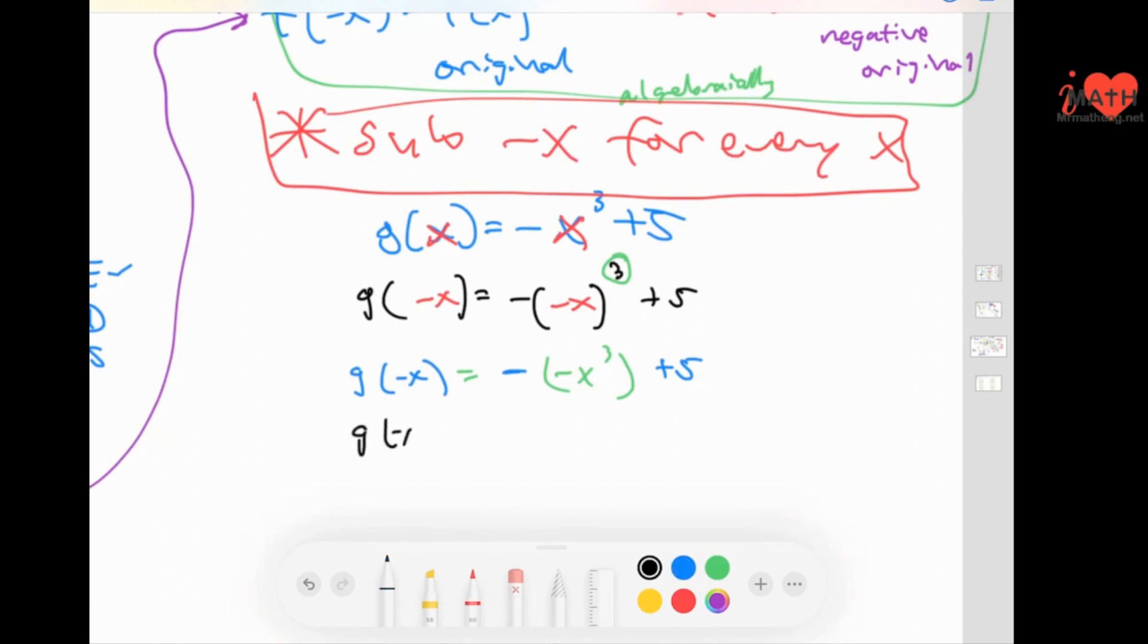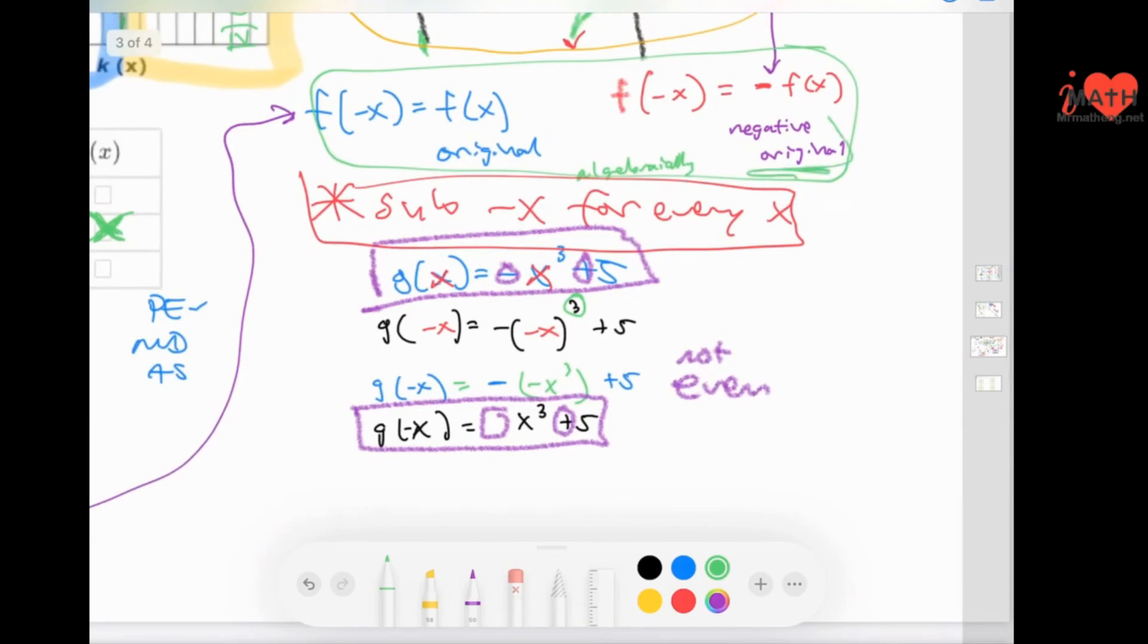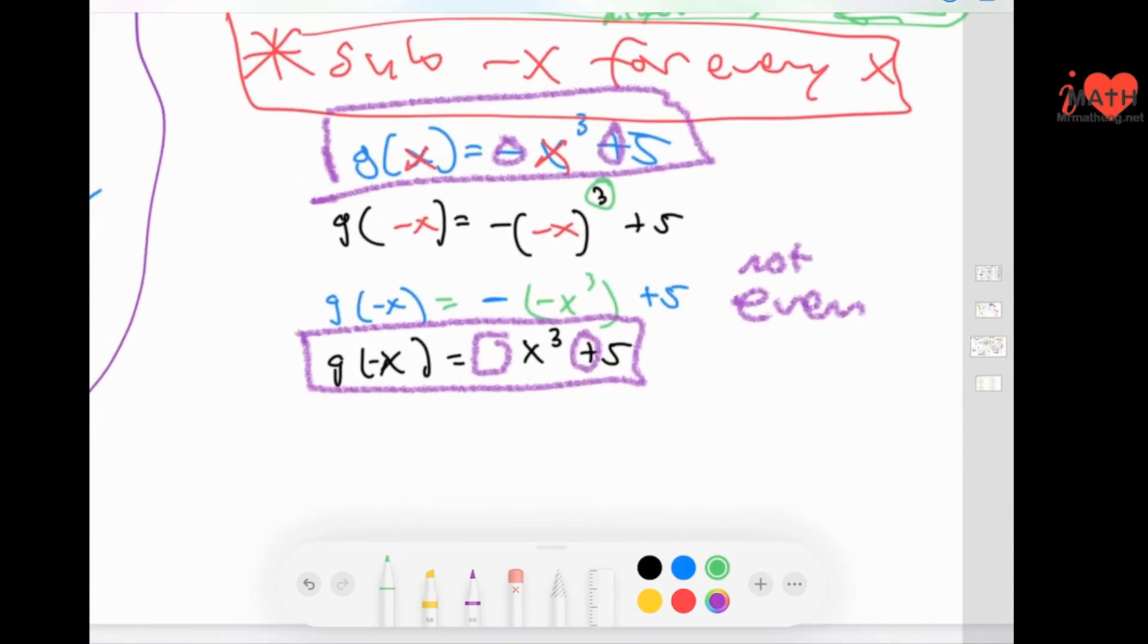Let's simplify that. We just tested it by putting in negative X. Opposite of negative X cubed is positive X cubed. Here's a question. Is this the same thing as this one? Are they the same? They look the same. They both have a positive, but this one has a negative and this one does not. So this means it's not even because it's not the original. How do you know if it is the one where it's the negatives of the original? Well, you have to factor out a negative.